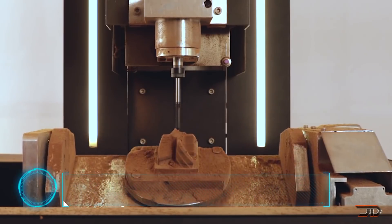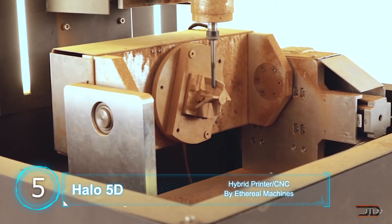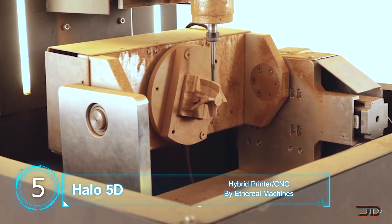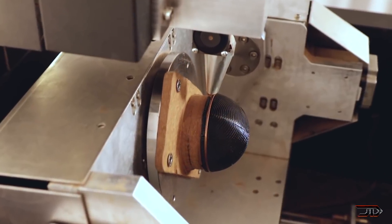At number 5, the Halo 5D printer. One of my favorites is a 5-axis, not 5-dimensions, CNC and 3D printer. The main difference here is that the printer's bed can tilt, and the printer head can also adjust its angle.